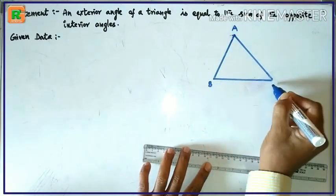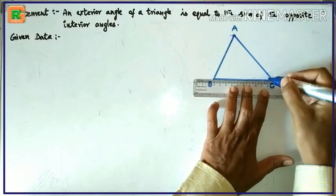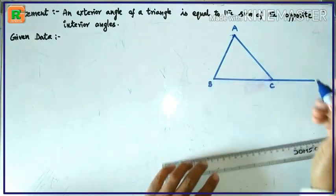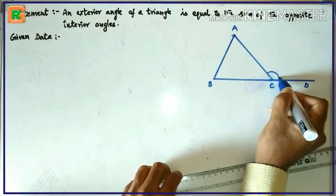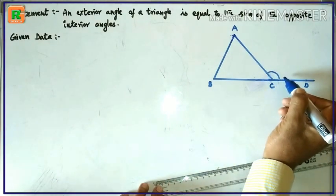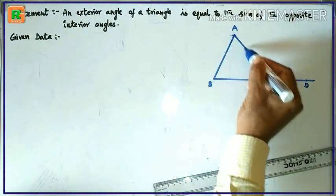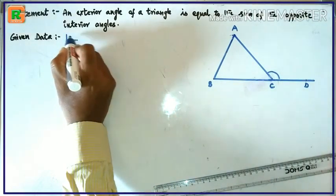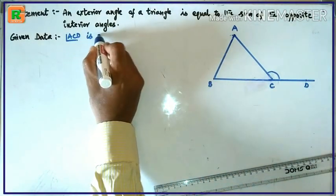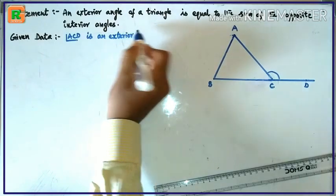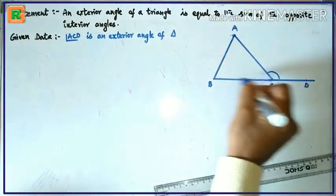Consider triangle A, B, C. Let us extend side BC. Angle ACD is an exterior angle of this triangle ABC.